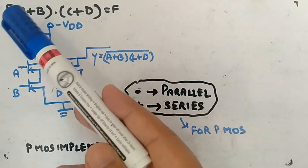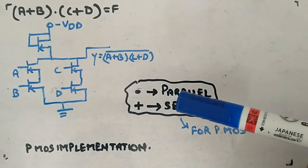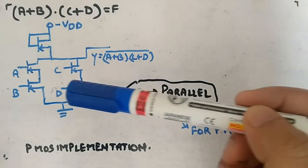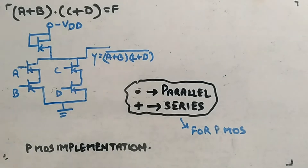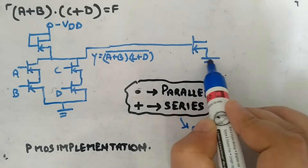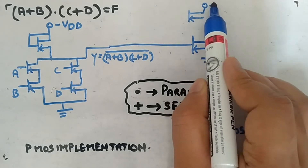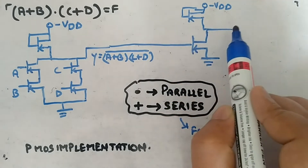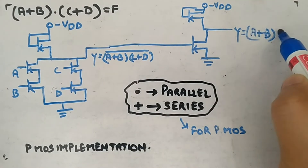So a + b means a series with b — you can see PMOS are there. Then dot means parallel connection — you can see the parallel connection. Then c + d means c series with d. So at y you will get (a + b)·(c + d) whole bar. Again you can connect this to an inverter — this will be ground, another connected to minus VDD — and from here you have y, which gives you (a + b)·(c + d).